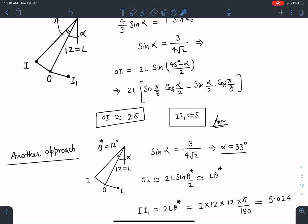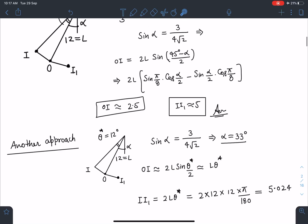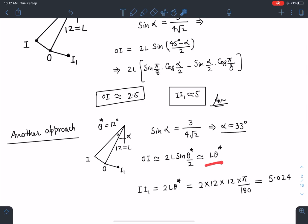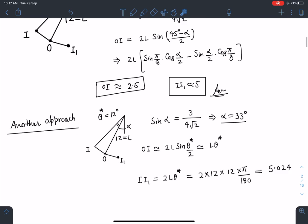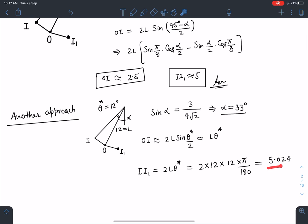So OI I can write if this angle is θ then this is 2L sinθ/2. And if it is 12 degrees or 15 degrees also by 2, values will come roughly you can say it will be 6, 7 degrees. So it is a very small angle, sinθ I can write as θ and if I simplify I will be getting it as Lθ. When I substitute the value here II₁ on simplification I am getting answer as 5.024.